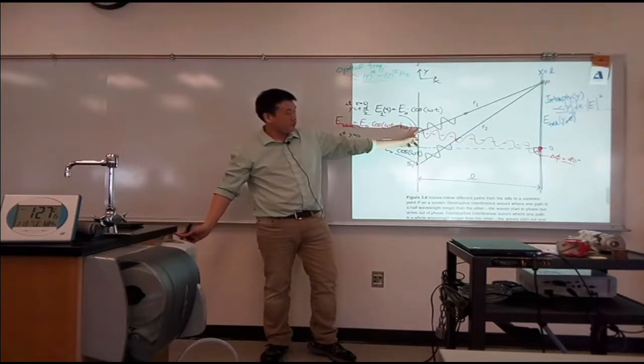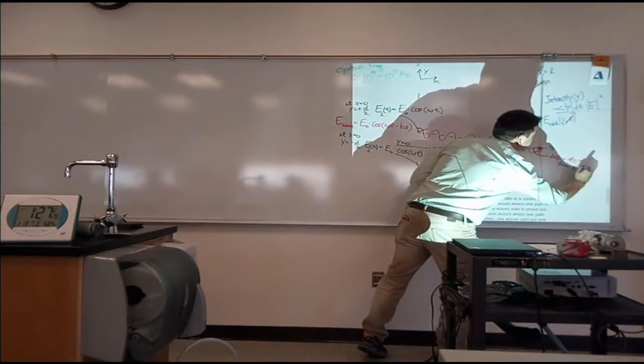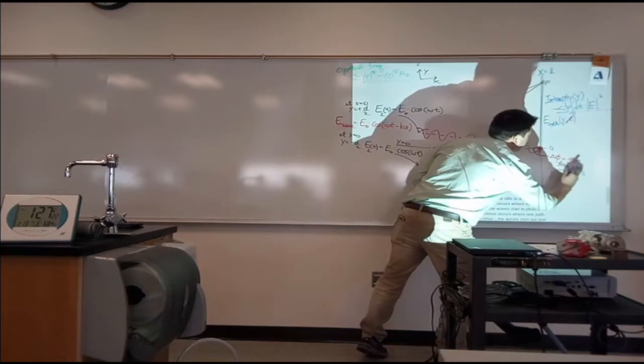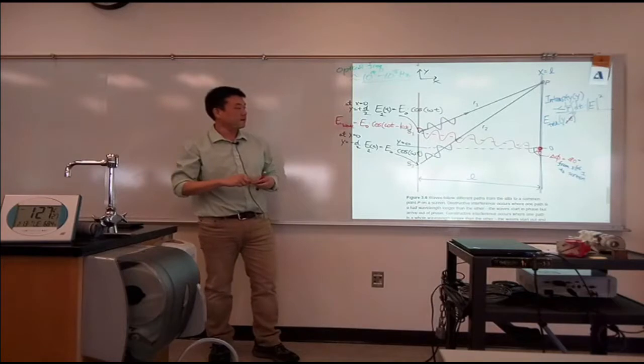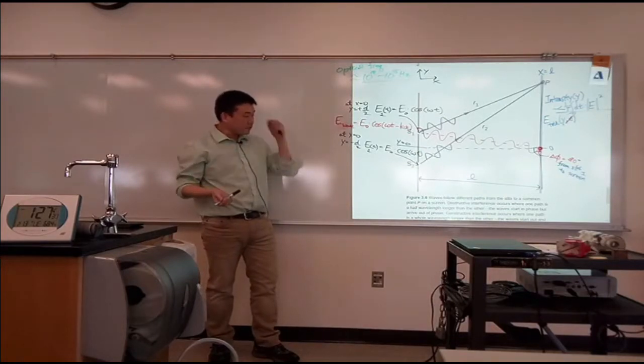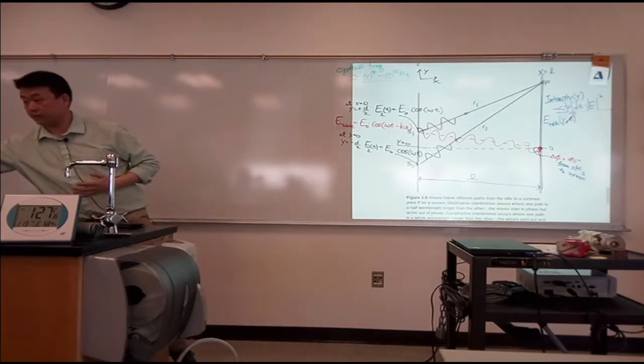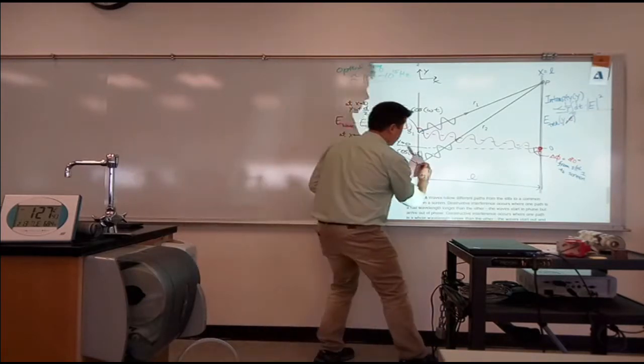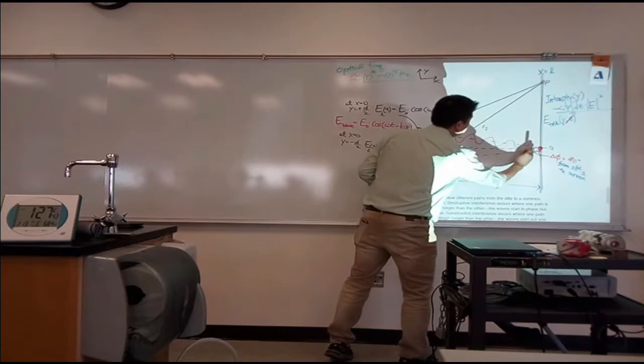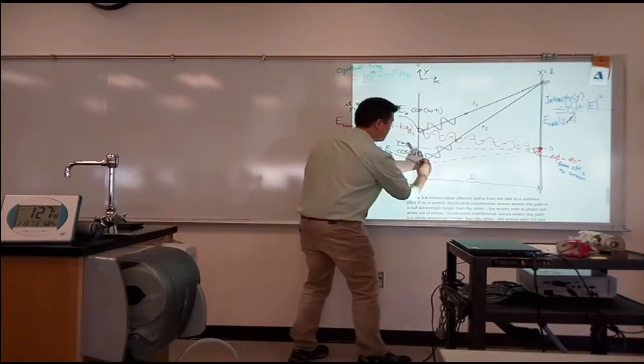Now, what I want to do, so this is the phase difference from slit one to screen. And what I want to consider now is the phase for the electric field that's arriving from the other slit. So, for the electric field that's arriving from the other slit, this does the same thing. It starts out in phase. So, goes like this. So, when I draw it, I'm gonna mess it up.